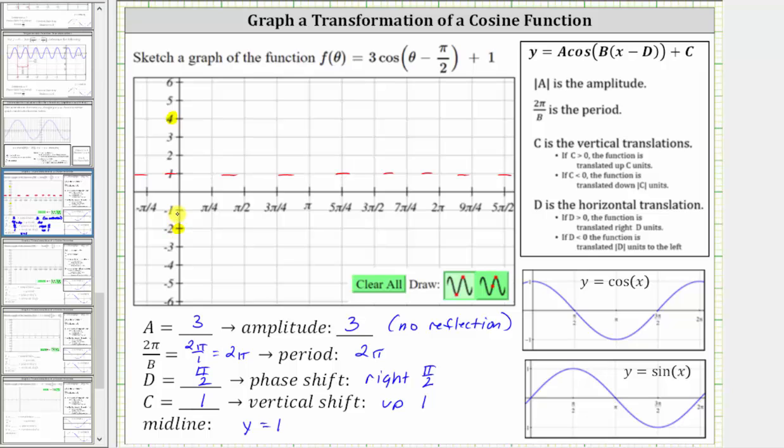We normally start graphing the cosine function along the y-axis, but because we have a phase shift of right π/2 units, we begin our graph at x = π/2.